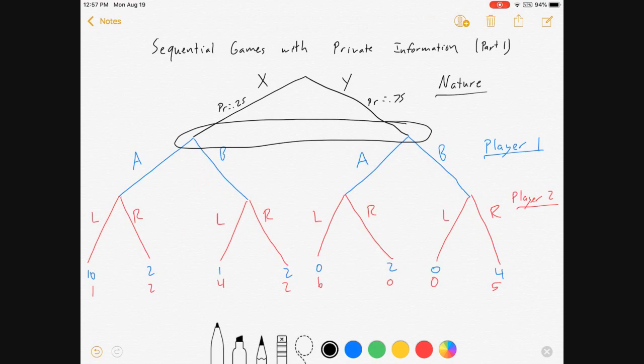I'm going to let player two know exactly what happened, and so player two will not have the same information problem. While player one doesn't know if we're at this node or this node, player two will always know exactly if they're there or there or there or there.